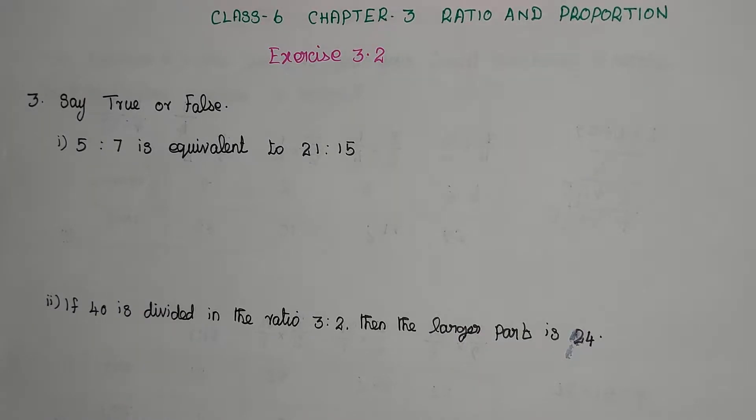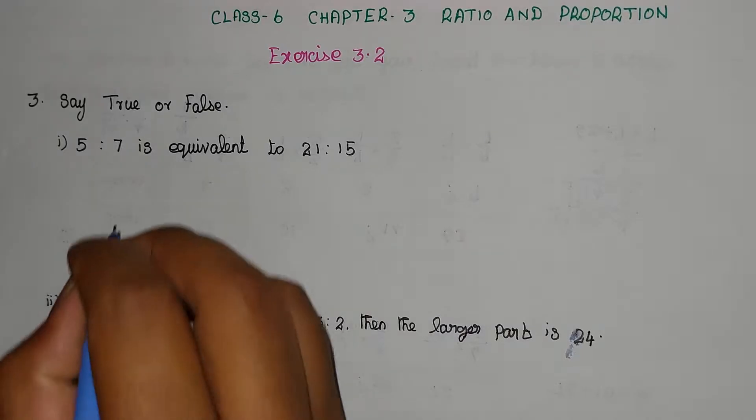Hello students, in this video we are going to learn Class 6, Chapter 3, Ratio and Proportion, Exercise 3.2, Problem number 3. Say true or false. Subdivision 1: 5 is to 7 is equivalent to 21 is to 15.